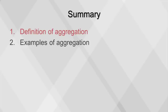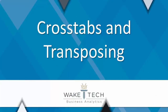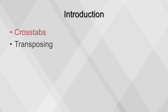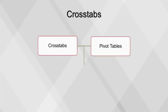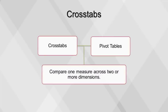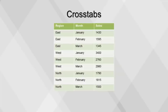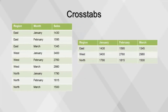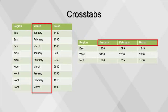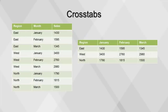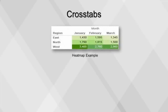This concludes our video on aggregation. Today we covered a definition of aggregation and examples of aggregation. This video will cover crosstabs and transposing. Crosstabs are also called pivot tables — they are used to compare one measure across two or more dimensions. One dimension will have its values transformed into columns, and the other dimensions will be aggregated. For example, a table showing sales by region and month can have a crosstab function performed with region as the grouping field, month as the header field, and sales as the data field. Crosstabs are an effective way to summarize and present data, as trends within the data are easier to identify. In data visualization, color is added to build a heatmap.